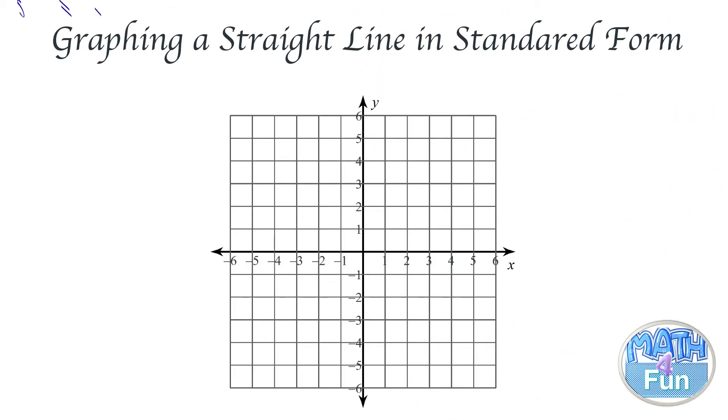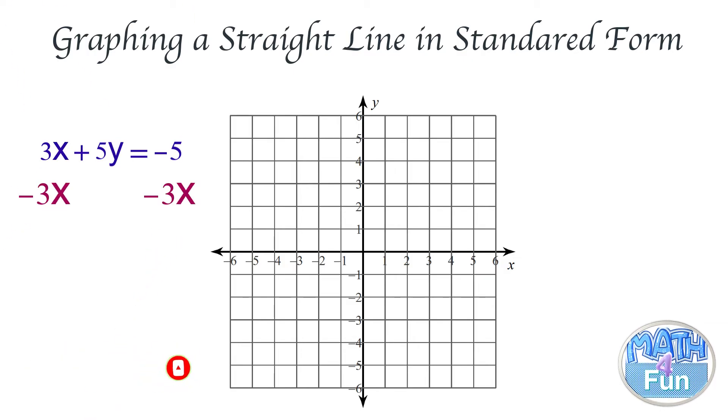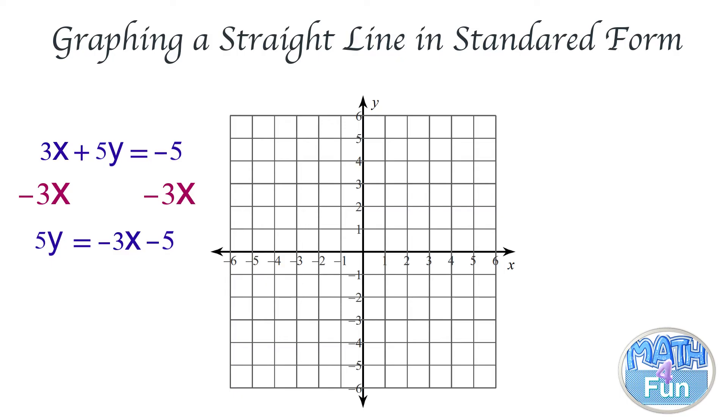Let's look at this question. Here we have 3x + 5y = -5. What we have to do is move 3x to the other side, so it becomes 5y = -3x - 5.